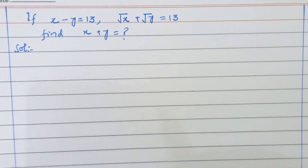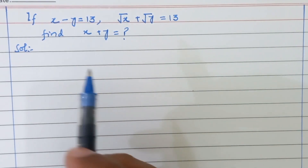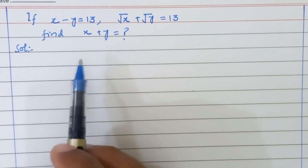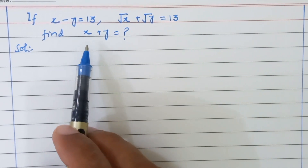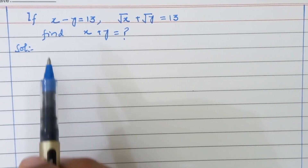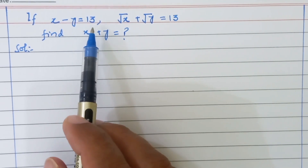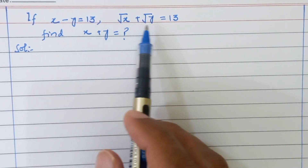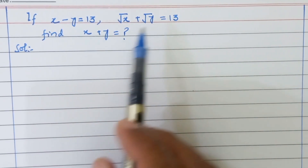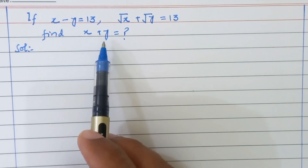Hello everyone, I hope that all of you will be doing well. Today, I am going to solve this beautiful equation. We have given that x minus y is equal to 13, root x plus root y equals 13, then find the value of x plus y.